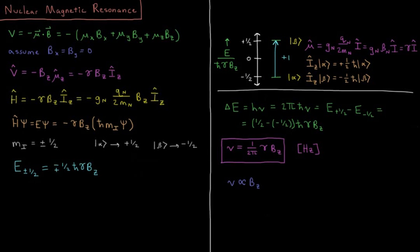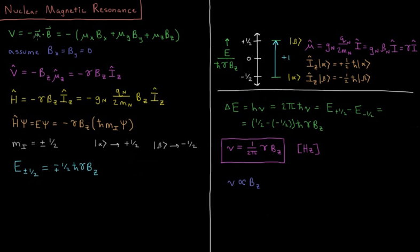This video will discuss the energetic transitions which form the basis of nuclear magnetic resonance. We discussed in the previous videos on magnetic moments how we can get the magnetic dipole of a given nucleus, and now we're going to calculate what potential energy is associated with that magnetic dipole.